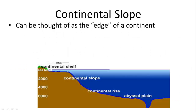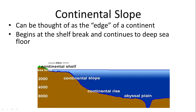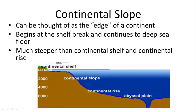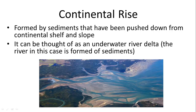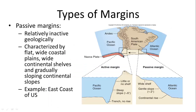The continental slope is like the edge where you fall off into the deep sea — it begins at the shelf break and continues to the deep sea floor, much steeper than the shelf. The continental rise is where sediments gather at the bottom of the slope, like an underwater river delta where sediments accumulate rather than water.